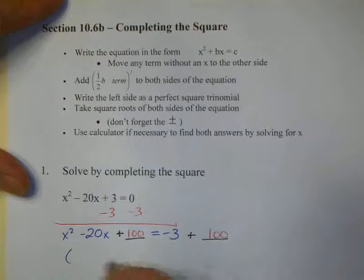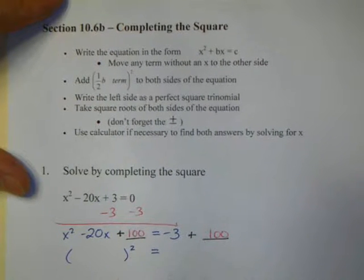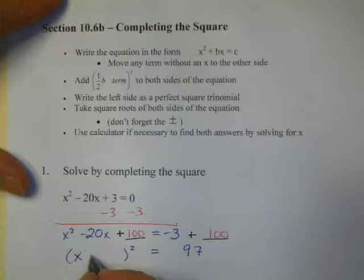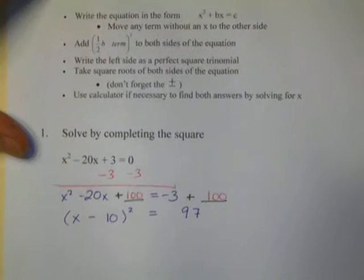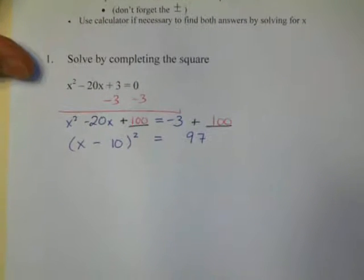So, we're going to add 100 to both sides. We now have a perfect square trinomial on the left and 97 on the right. To determine what this value is on the left, we merely take half of the negative 20, and we have x minus 10 parentheses squared.